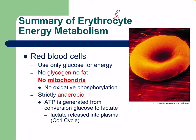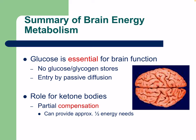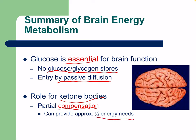Red blood cells use glucose only for energy — they do not use glycogen or fat, and they have no mitochondria, so there is no Krebs cycle or electron transport chain. There is no oxidative phosphorylation, so red blood cells are strictly anaerobic. Even though they carry oxygen, they don't use it themselves. ATP is generated from conversion of glucose to lactate, released into plasma through the Cori cycle. The brain uses glucose as its primary fuel and cannot use glycogen; glucose enters through passive diffusion, but ketone bodies can provide approximately half the energy needs of the brain during starvation.